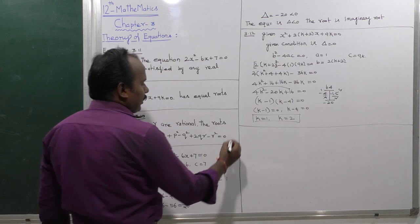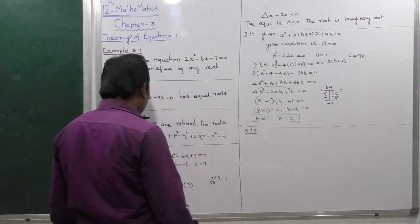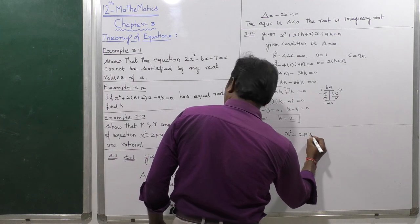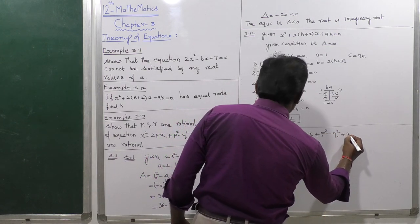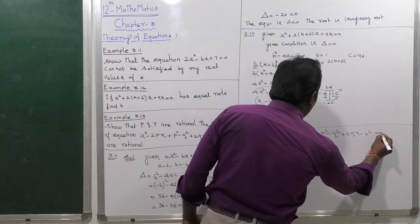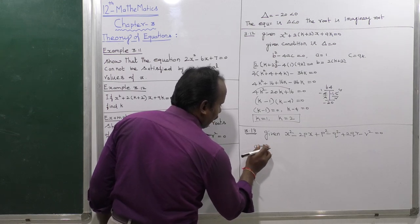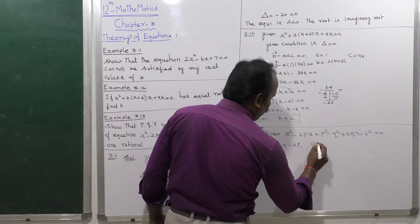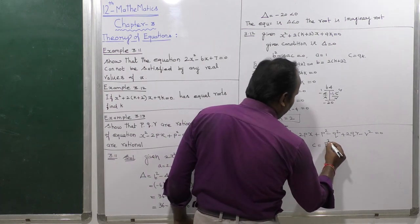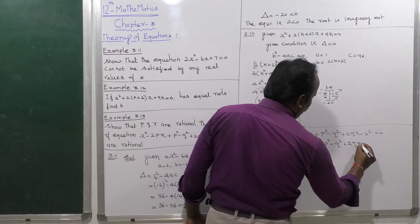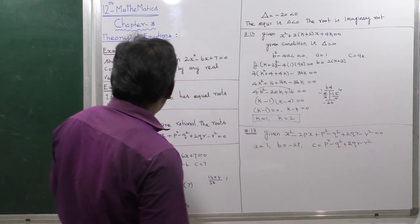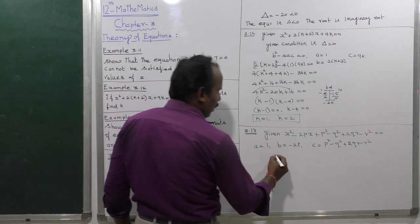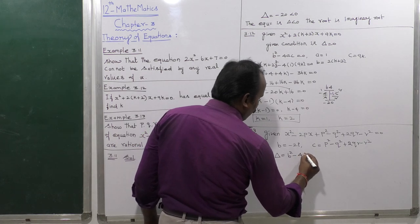Now the last example, 3.13. The given equation is x squared minus 2(p minus q)x plus (p squared minus q squared plus 2qr minus r squared) equals 0. Here a equals 1, the coefficient of x squared. b equals minus 2p, the coefficient of x. And c equals p squared plus q squared plus 2qr minus r squared.